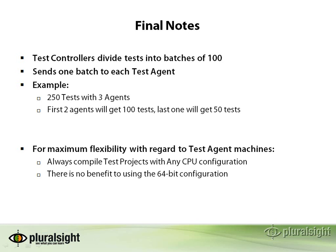Some final notes. In terms of how the controller works, it batches things up by hundreds. So if you had a finite number of tests you wanted to run — let's say 250 — and you had three agents, realize that it's not going to divide them evenly. It's going to send 100 to the first two agents, and the last one is only going to run 50 of the tests.